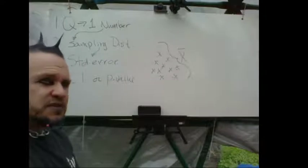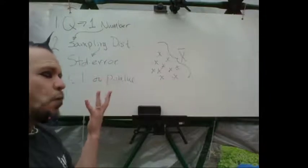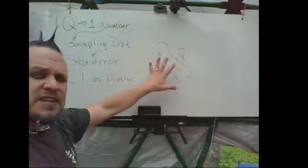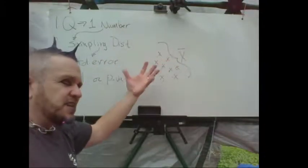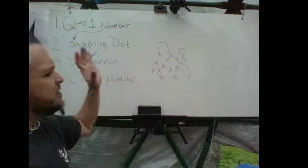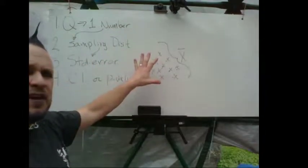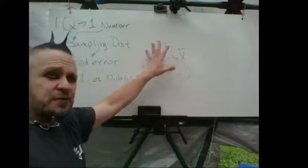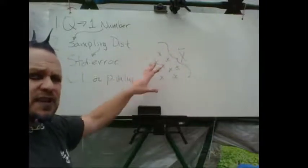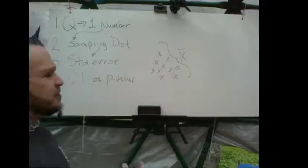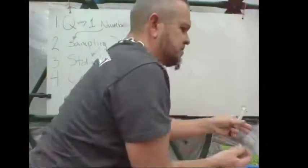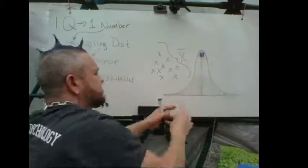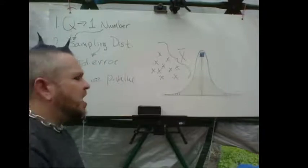Then we think: what is the sampling distribution of the means? That always involves some assumptions — you do a thought experiment. You think: what if this mean and these people represented the entire population? Because it's all about trying to guess what's in the population. This becomes the sampling distribution of the means.